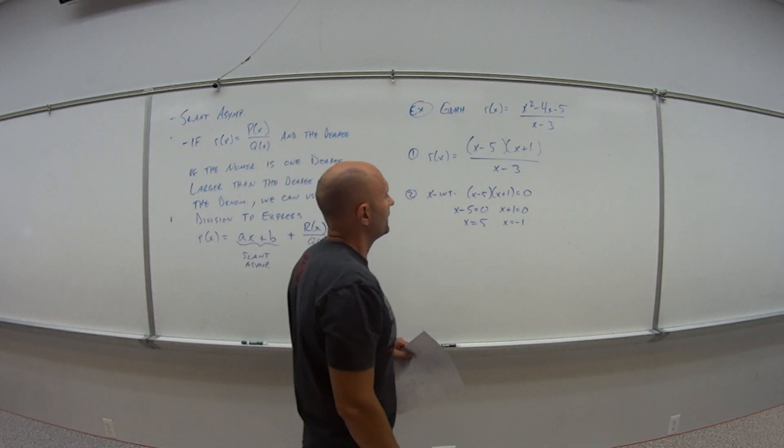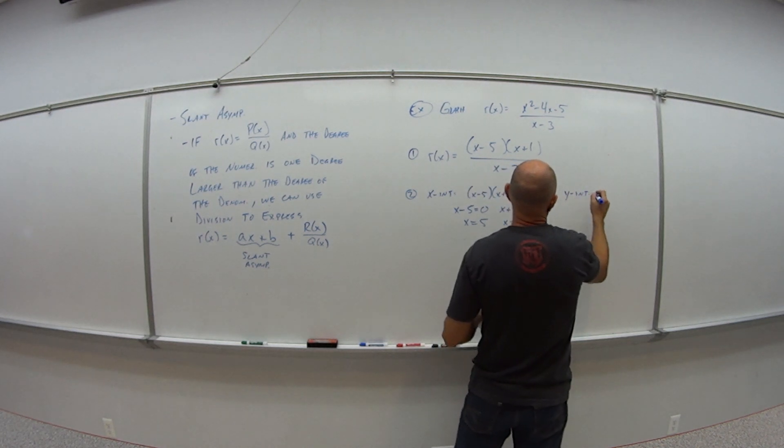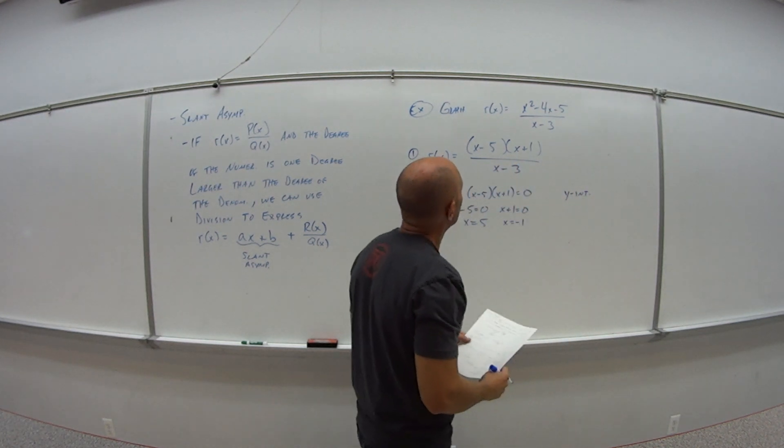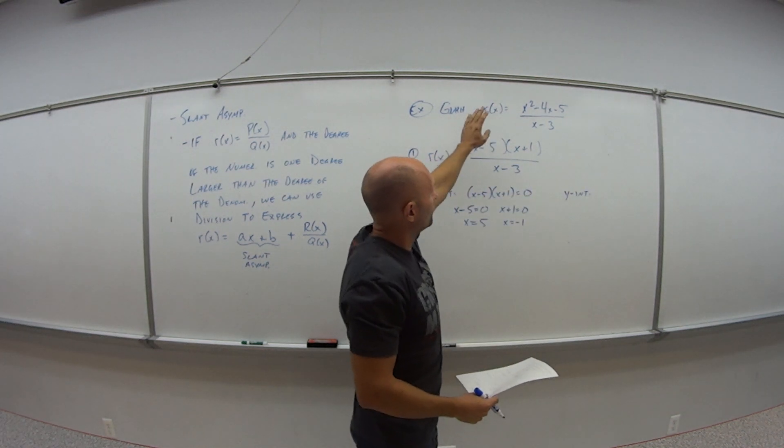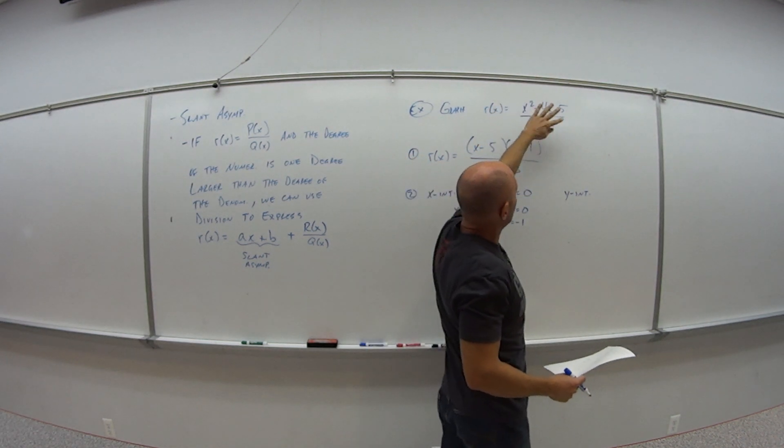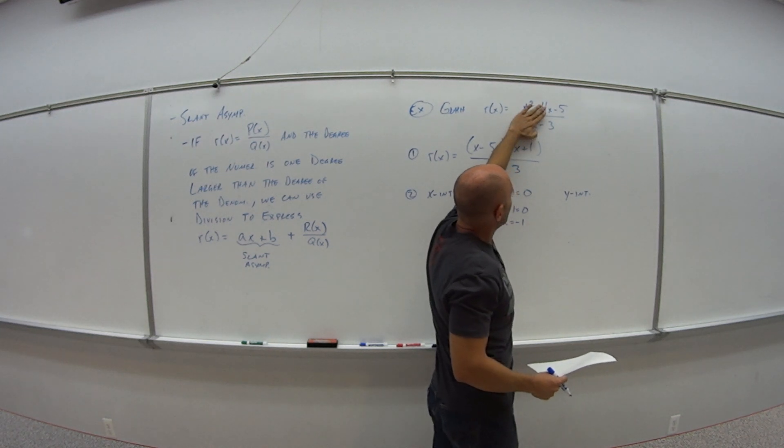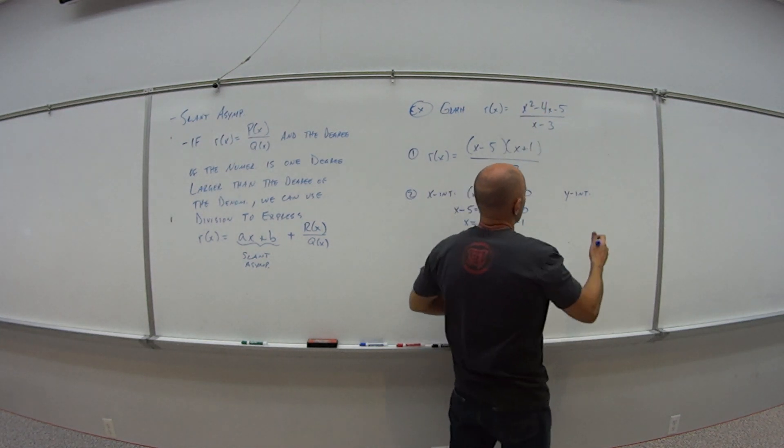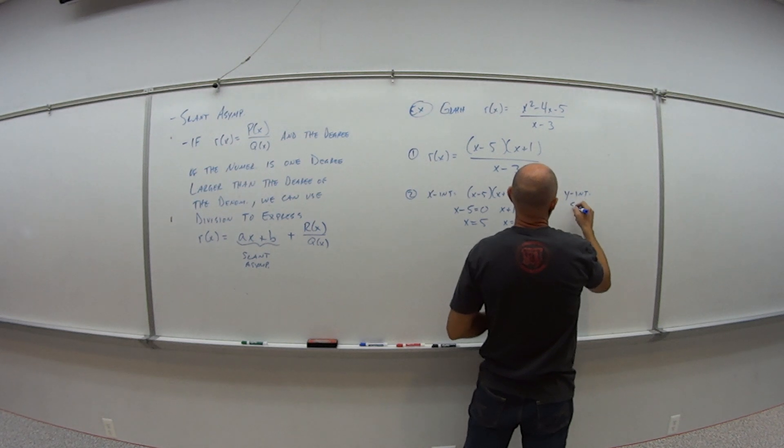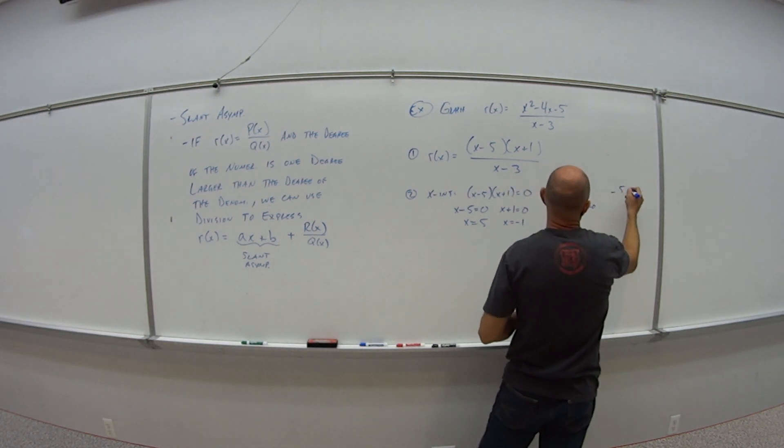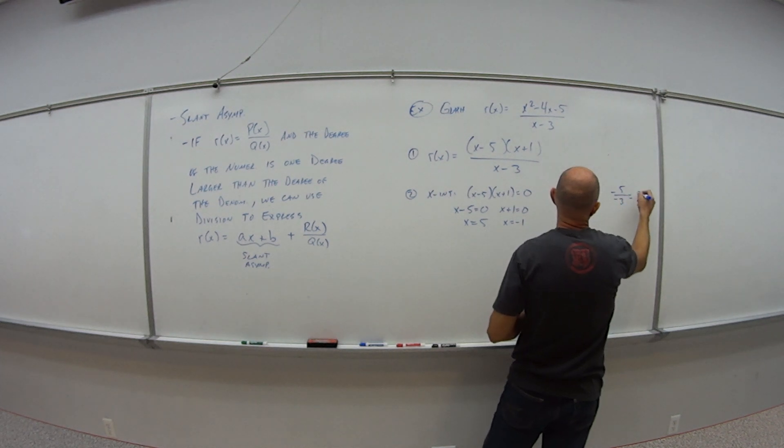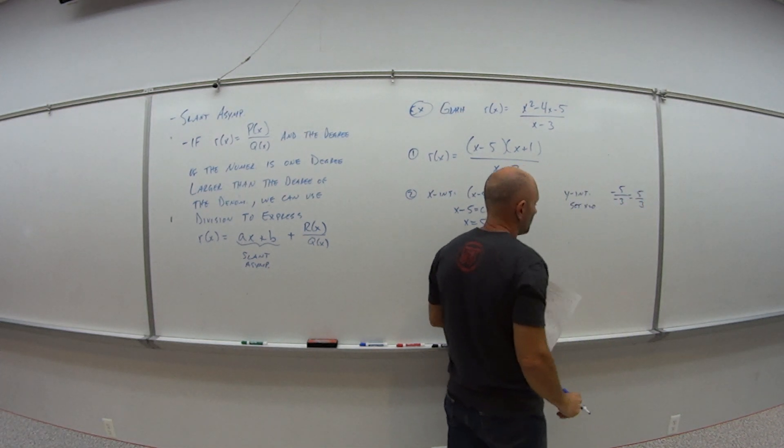Now my y intercepts. So y intercepts, I set x equals to 0. So again, usually this is easier to go back to the original because any piece that has an x is gone. So I get what? Negative 5 over negative 3. So y intercepts, set x equals 0. So I get negative 5 over negative 3, which is positive 5 thirds.